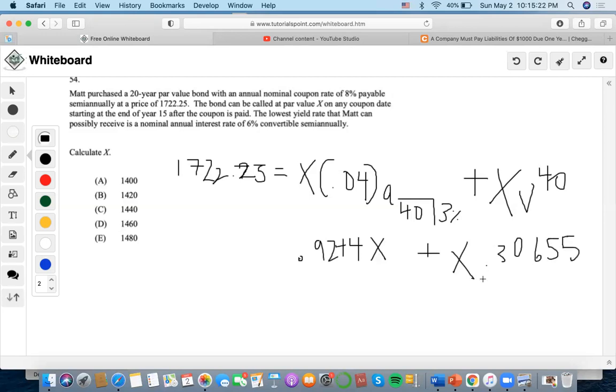Now let's add both of these. So 0.9244 plus 0.30655 is 1.23095X.